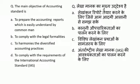Which one is the main objective of Accounting Standard? Options are: to prepare the accounting reports which are easily understood by common men, to comply with legal formalities, to harmonize the diversified accounting practices, and to comply with the requirements of International Accounting Standard.